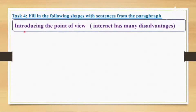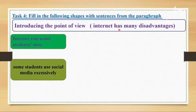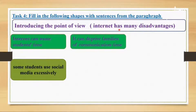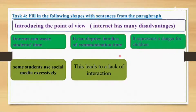The first shape is the topic sentence: 'Internet has many disadvantages.' The next sentence — 'Internet can waste students' time' — is a supporting sentence. The detail for it is: 'Some students use social media excessively.' The following supporting sentence is: 'It can deprive families of communication time.' The explanation or detail is: 'This leads to a lack of interaction' — which is actually a result that explains the supporting sentence.